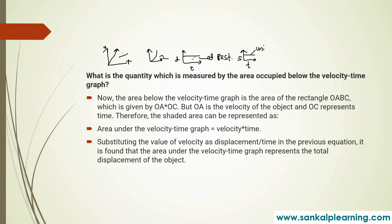To summarize the graph questions: for the distance-time graph, if the straight line is parallel to the X axis, it indicates that the body is at rest. For the speed-time graph, if the straight line is parallel to the time axis, it means the body is in uniform motion.